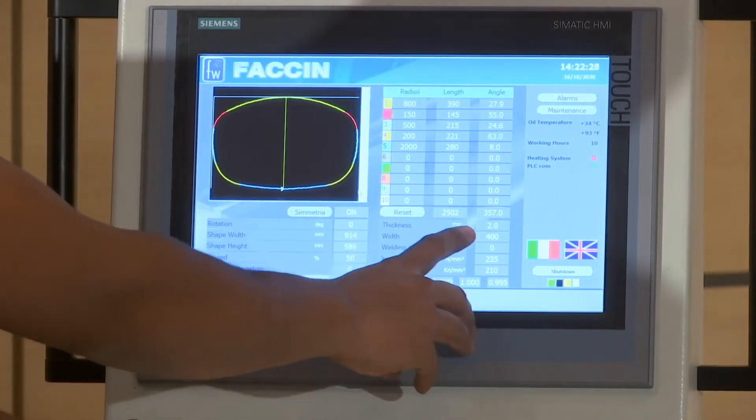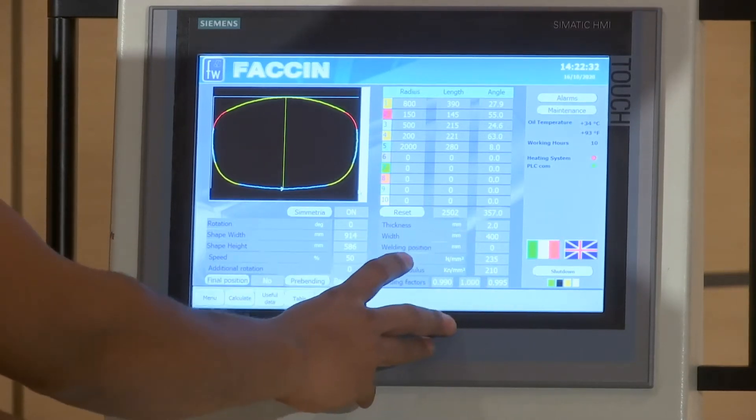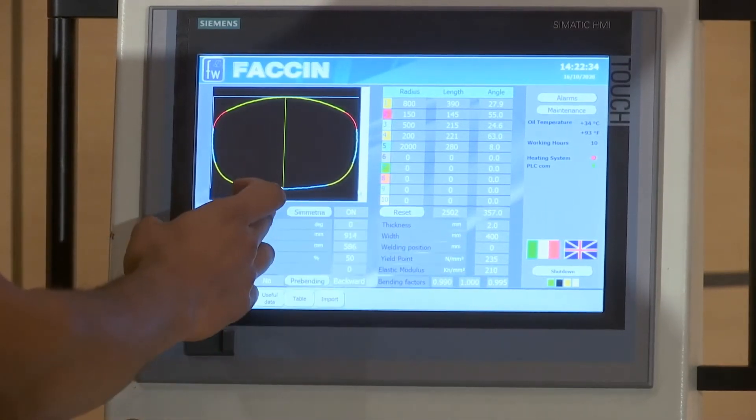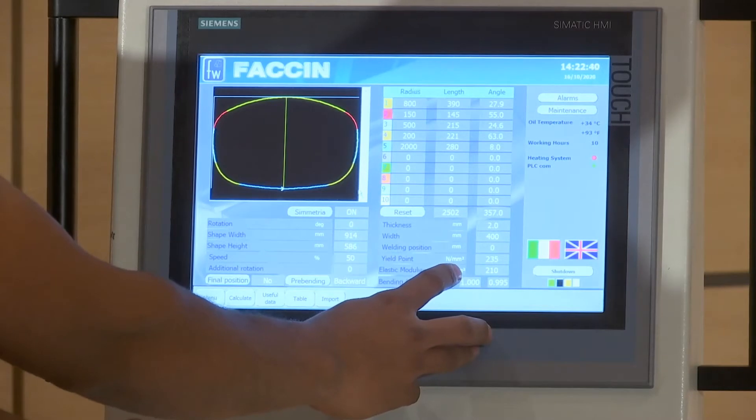Same again, we have got the same data of the plate with the thickness, width of the plate, the welding point if we want to change the welding point from the middle to one or the other side, and the characteristics of the material.